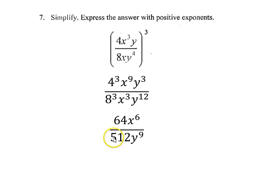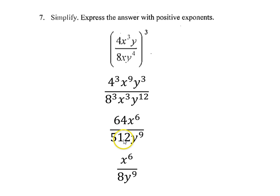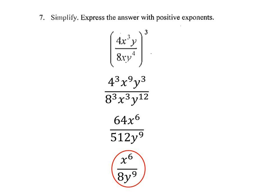The opposite is true for the y's. Now we have y to the third over y to the twelfth. That's y to the negative ninth, but there are really more y's in the denominator — 12 in the denominator, 3 in the numerator — so I have y to the ninth in the denominator. I don't want a negative exponent, so I move that to the denominator of the fraction, which is why the 9 is positive. Then I have 64 over 512. That can be reduced because 64 goes into both 64 and 512. 64 over 512 is 1 eighth. So I have x to the sixth over 8y to the ninth, and that is simplified with all positive exponents.